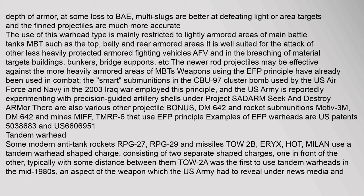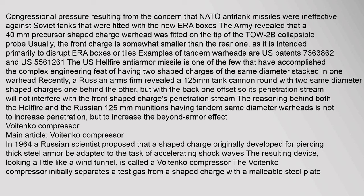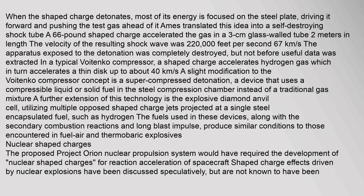Some modern anti-tank rockets (RPG-27, RPG-29) and missiles (TOW-2B, ERYX, HOT, Milan) use a tandem warhead shaped charge, consisting of two separate shaped charges one in front of the other, typically with some distance between them. TOW-2A was the first to use tandem warheads in the mid-1980s, an aspect of the weapon which the U.S. Army had to reveal under news media and Congressional pressure, resulting from concern that NATO anti-tank missiles were ineffective against Soviet tanks fitted with new ERA (explosive reactive armor) boxes. When the shaped charge detonates, most of its energy is focused on the steel plate, driving it forward.